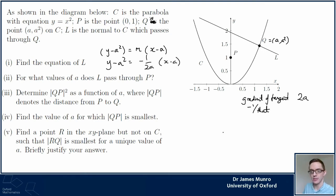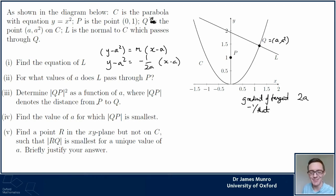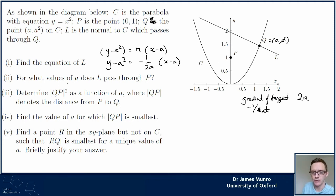So my line is: y − a² = −1/(2a) · (x − a). That's part one done. For part two, when does this go through P? I need to check whether the point P = (0, 1) lies on the line. The point P is on the line if: 1 − a² = (−1/(2a)) · (0 − a).